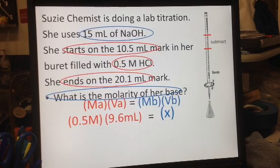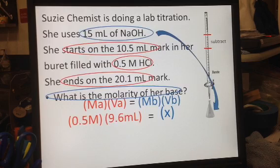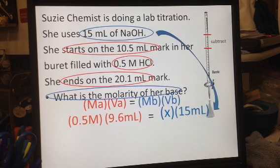Now, how do I know that's for my base? Because I know how to read formulas, and this says sodium hydroxide, and anything ending in hydroxide is a base. This would have been the amount of liquid that she put into her flask before starting her titration. So that's 15 milliliters.